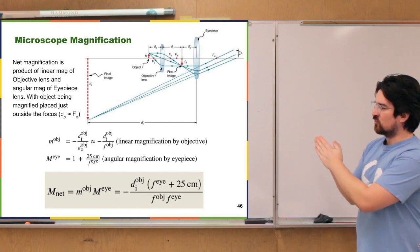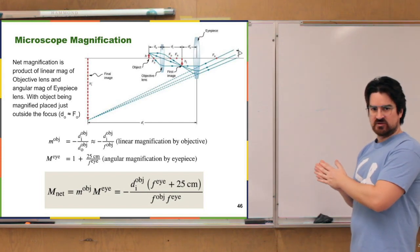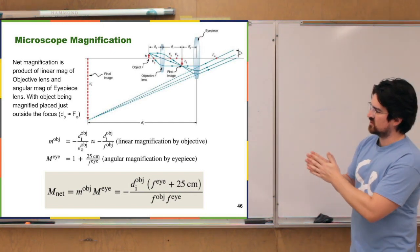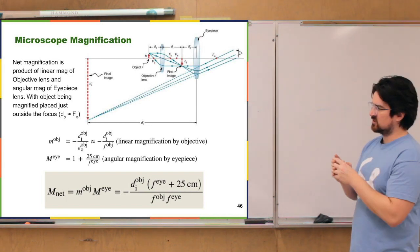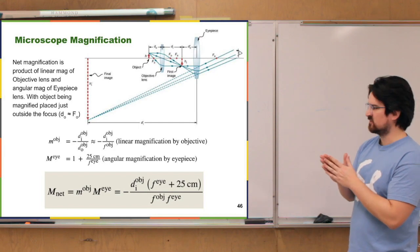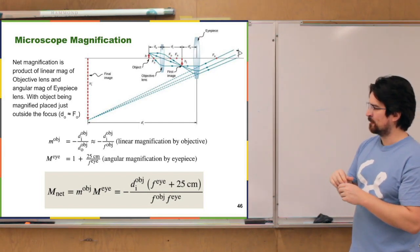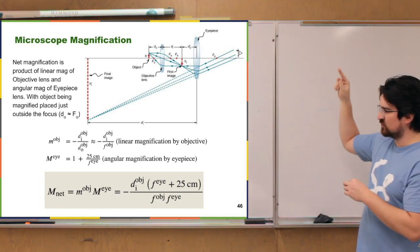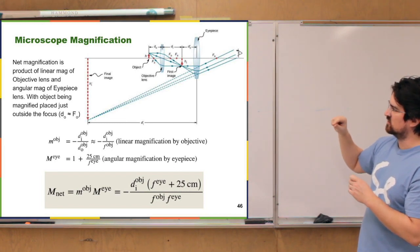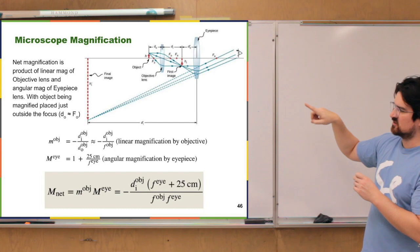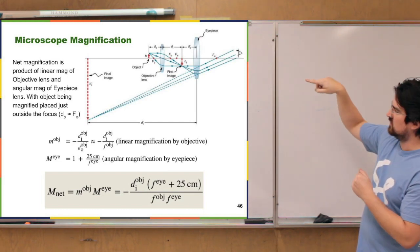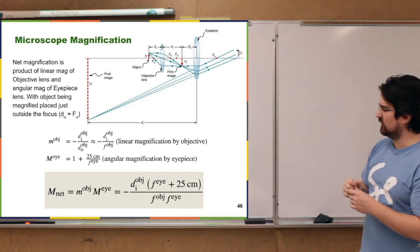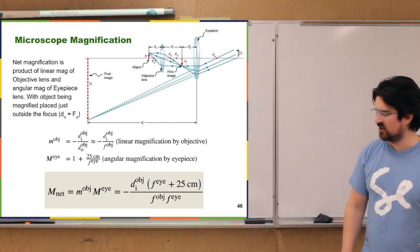The overall magnification is a product of the linear magnification of the objective and the angular magnification of the eyepiece. Using small angle approximation, we get an approximately equal expression. The 'obj' superscript notation indicates distances relating to the objective — so the image distance d_i is the distance of the image from the objective, as shown in the diagram. Put those two together and that's your net magnification.